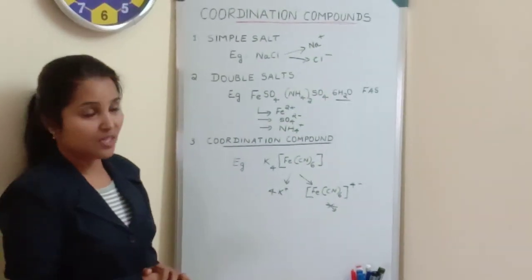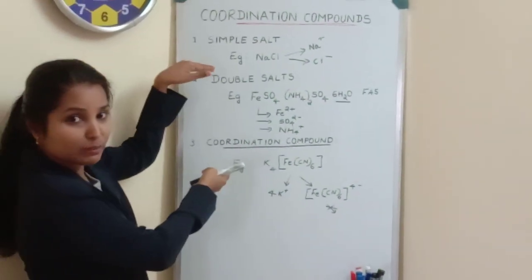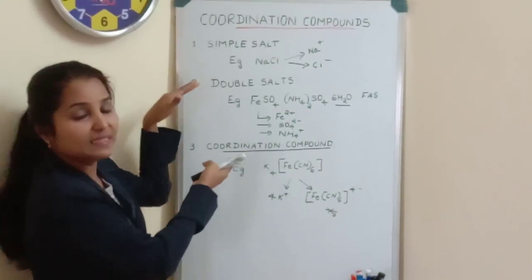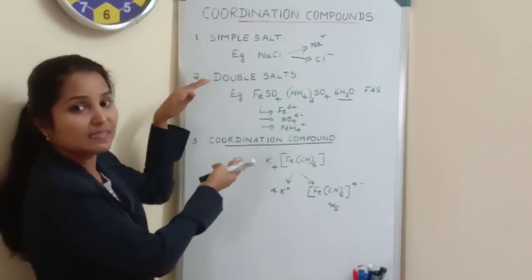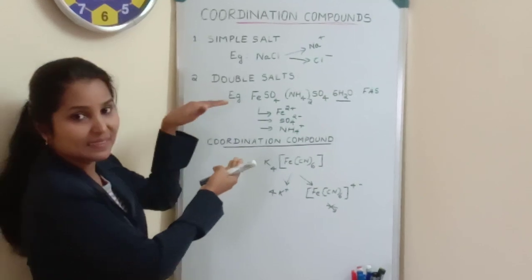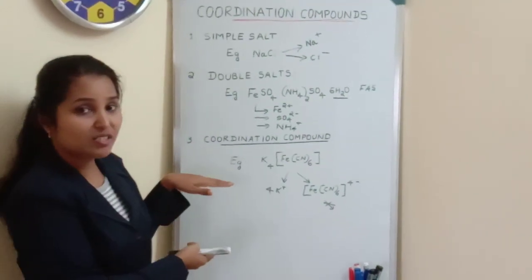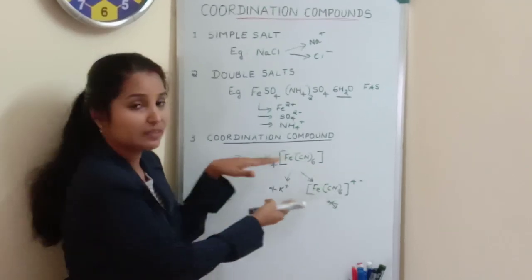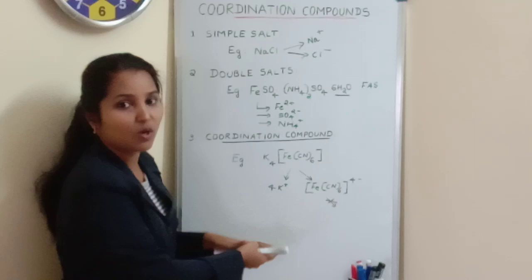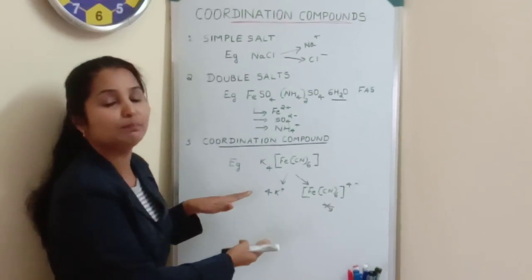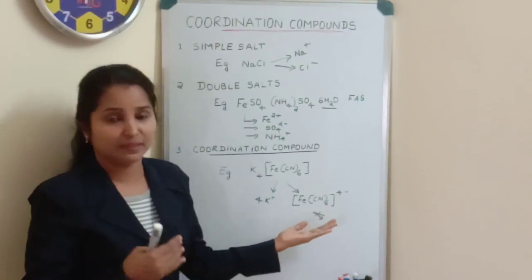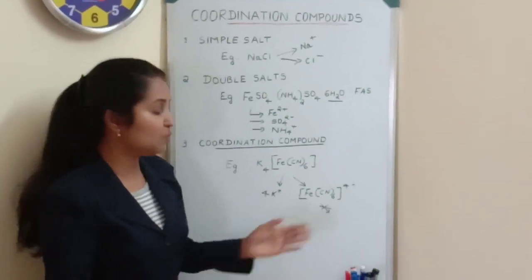Now you understand the basic difference between a double salt and a coordination compound. A double salt, when dissolved in water, will dissociate completely into its constituent ions. But a coordination compound — the complex part will not undergo dissociation even when dissolved in water, meaning it will not undergo complete dissociation. So what is hindering this complex part from dissociating in water?